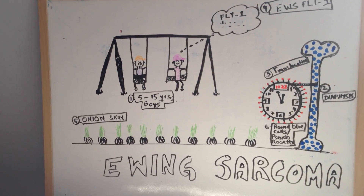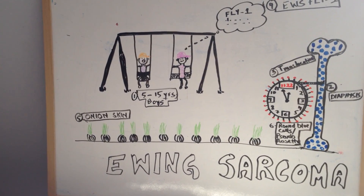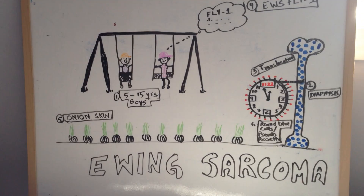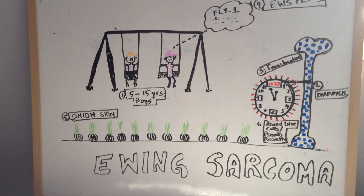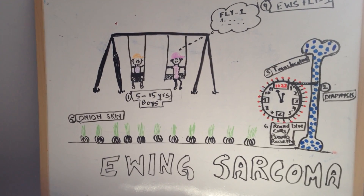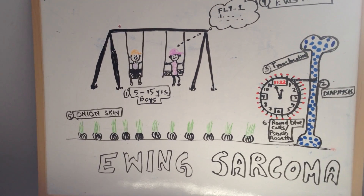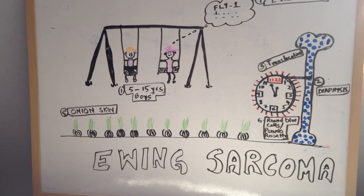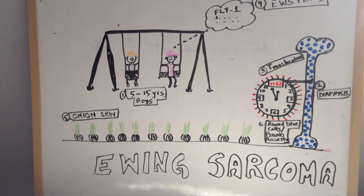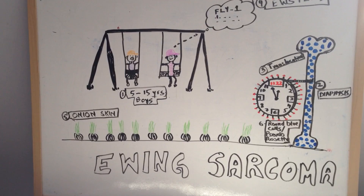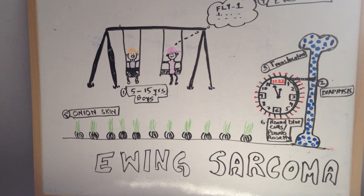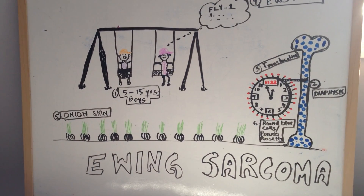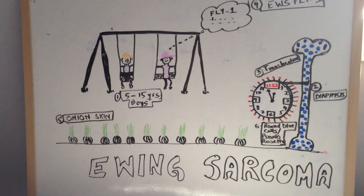Today the topic of discussion is Ewing's sarcoma — the second most common malignant bone tumor after multiple myeloma. I have made a swing as a mnemonic to help remember the name. A baby and a little boy are playing on a swing, representing that Ewing's sarcoma is more common in boys from age 5 to 15.